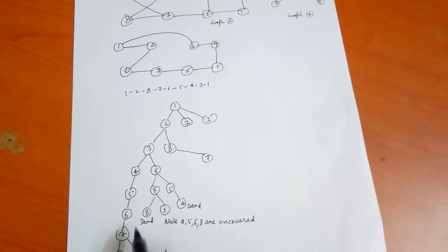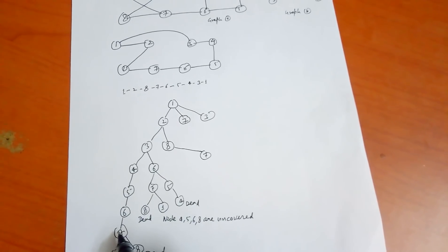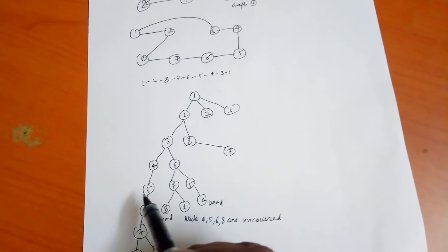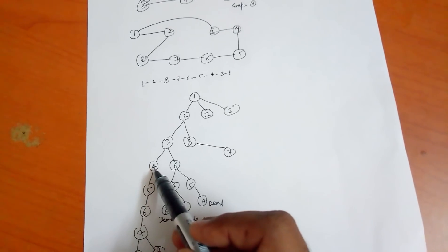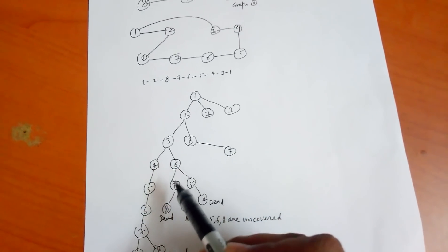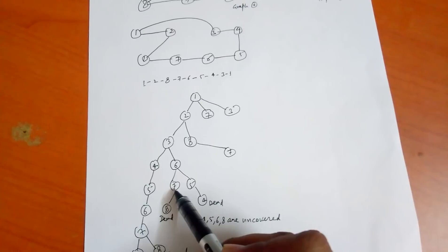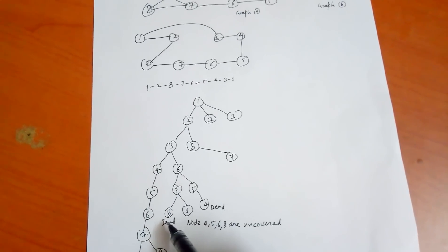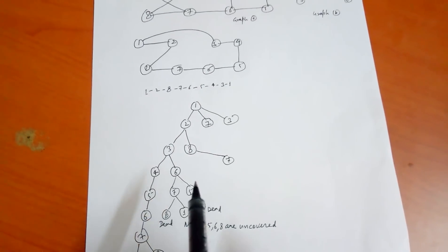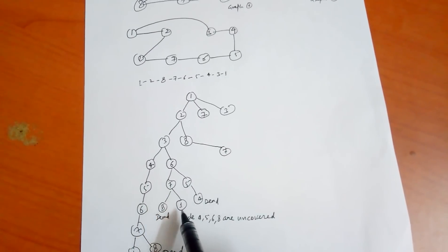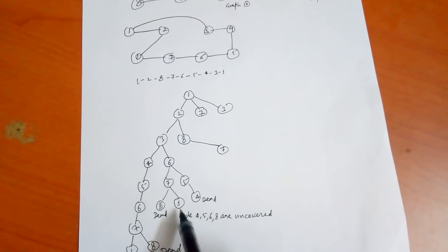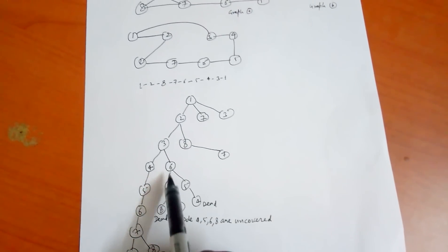Now we have to backtrack. If we backtrack to node 7, there is no other way from 7. We backtrack to node 6 — no other way. We backtrack to node 5 — no other way. We backtrack to node 4 — no other way. We backtrack to node 3, and try going to node 6 instead. From 6 we try 7 to 8, but it is a dead node. From 7 we return to 1, but nodes 4, 5, 6, and 7 are uncovered, so it cannot be a Hamiltonian cycle.